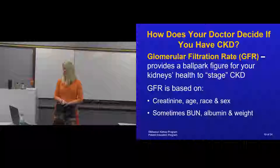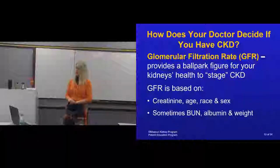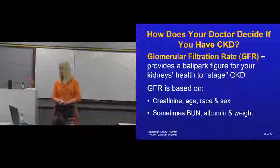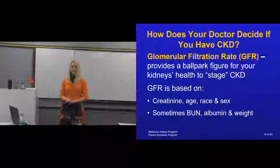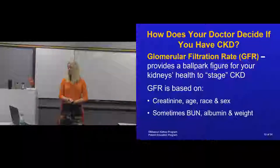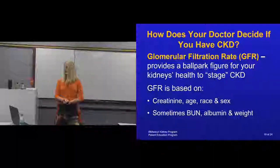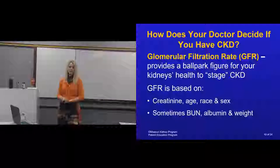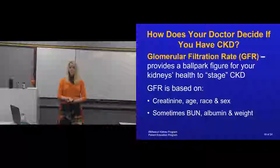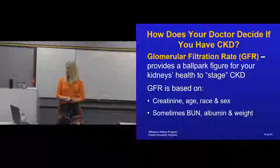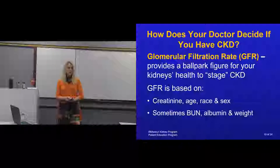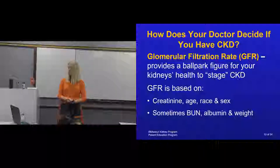How would your doctor or nurse practitioner decide if you have kidney disease? We look at the GFR, or glomerular filtration rate. If that number is not normal, we presume some sort of kidney damage — either acute or chronic. Your GFR is based on your creatinine level, your age, your race, and your sex. The reason we look at those is because if you have more muscle mass, your creatinine level may be higher and therefore your GFR might be higher too, since creatinine is based upon muscle mass. We also look at your albumin, weight stability, and BUN as additional measures of waste.